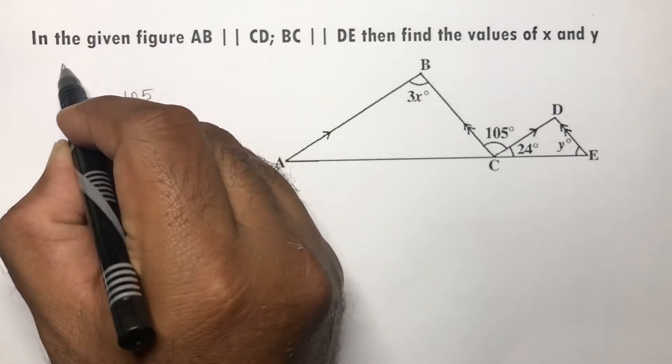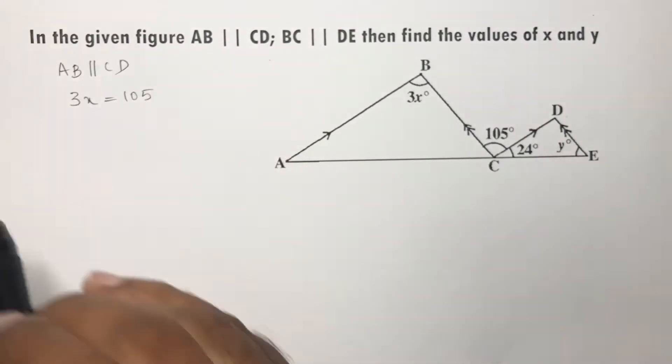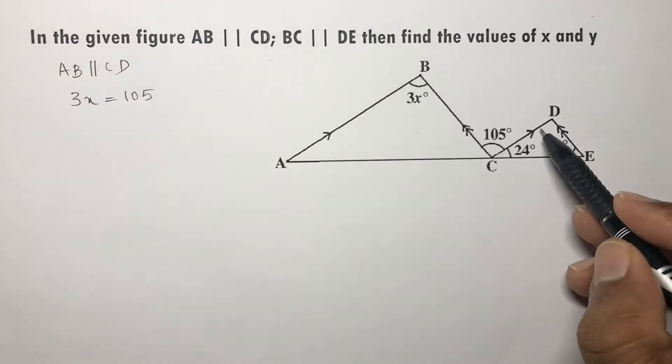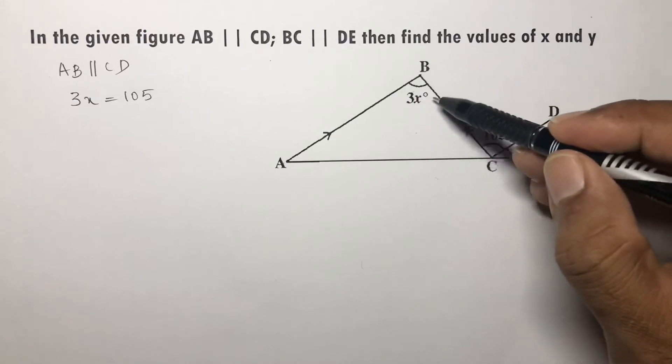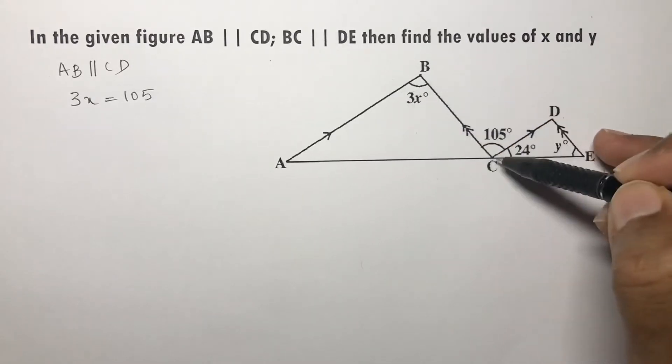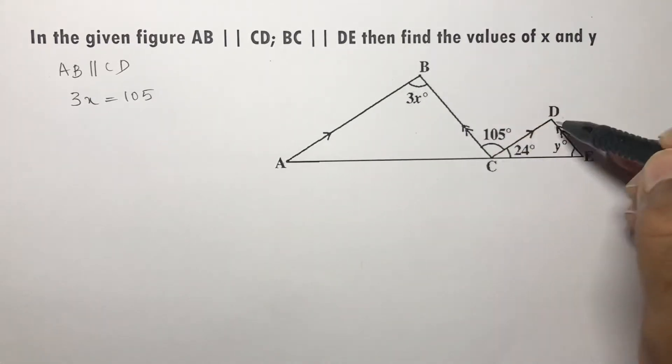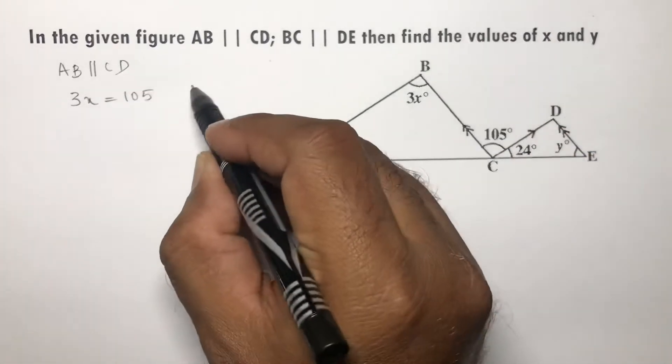If AB is parallel to CD, and if BC is a transversal, then 3x and 105 will come in the shape of Z. These are interior alternate angles.